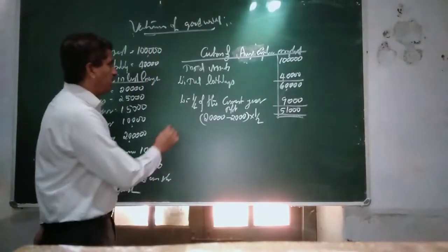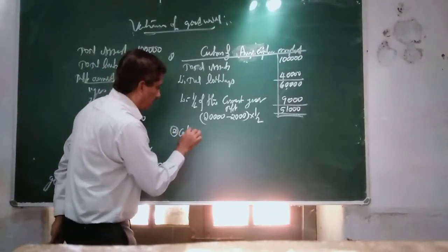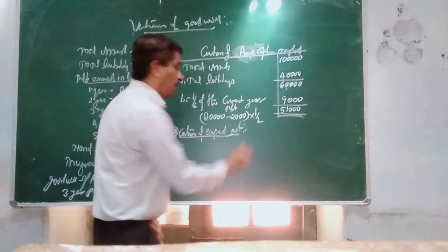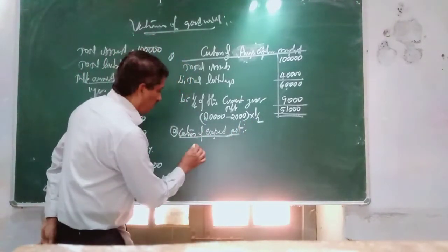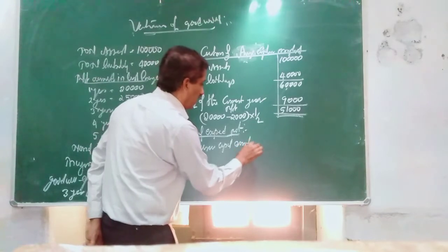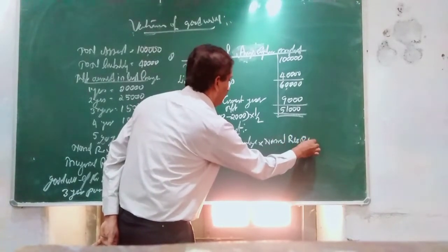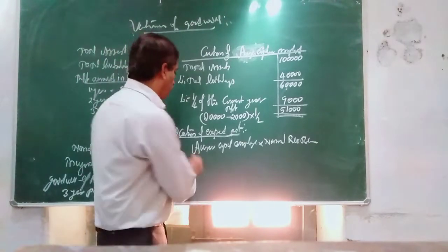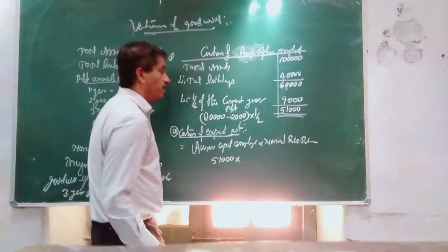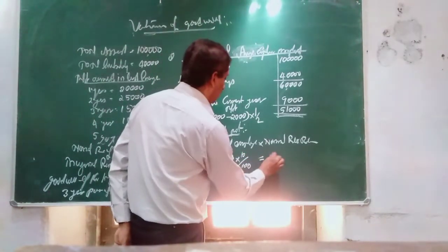Second step: Calculation of expected profit. The formula is average capital employed multiplied by normal rate of return. That is 51,000 into 10%, which gives expected profit of 5,100.